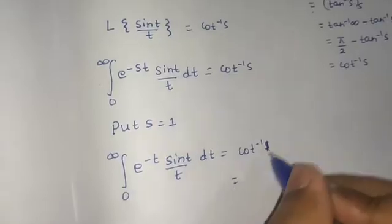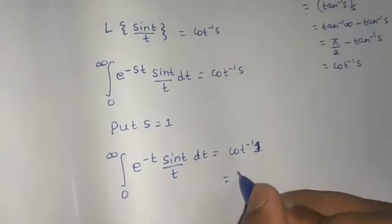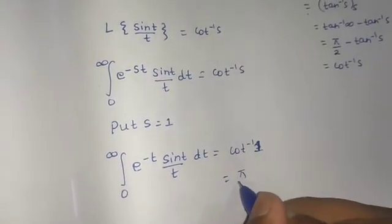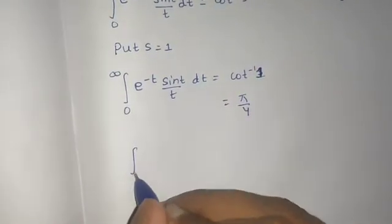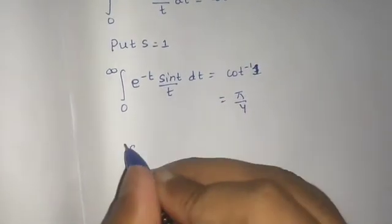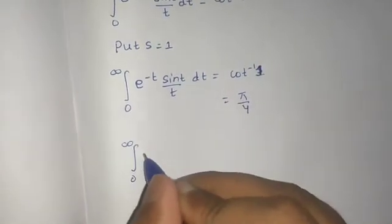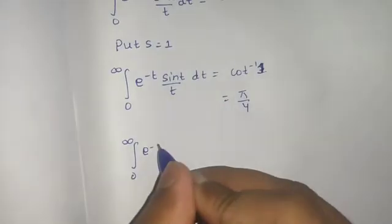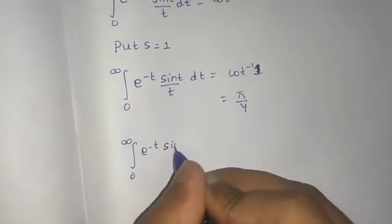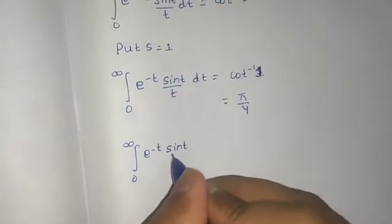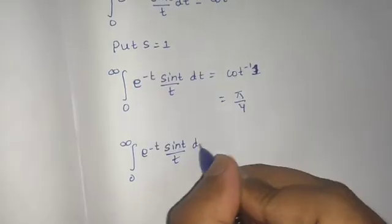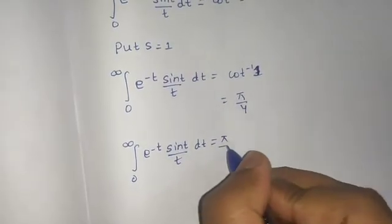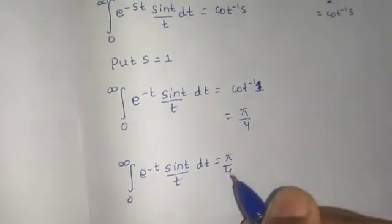Cot⁻¹(1) is π/4. So finally we have the integral from 0 to infinity of e^(-t) sin(t)/t dt equals π/4.